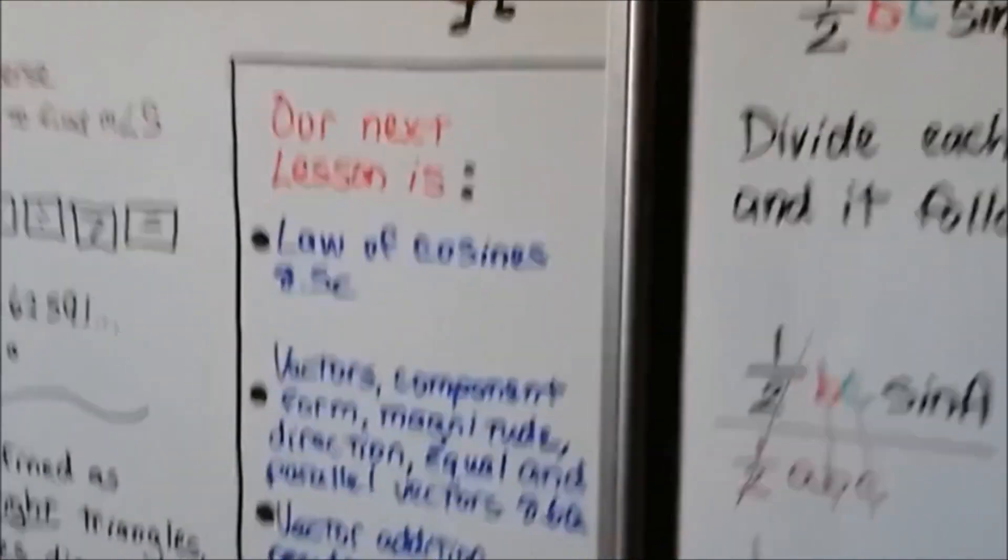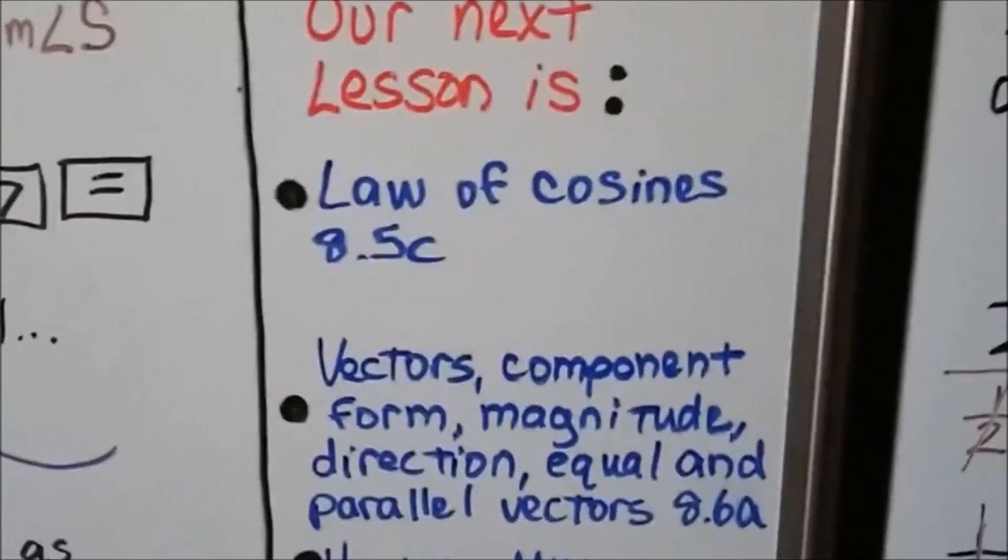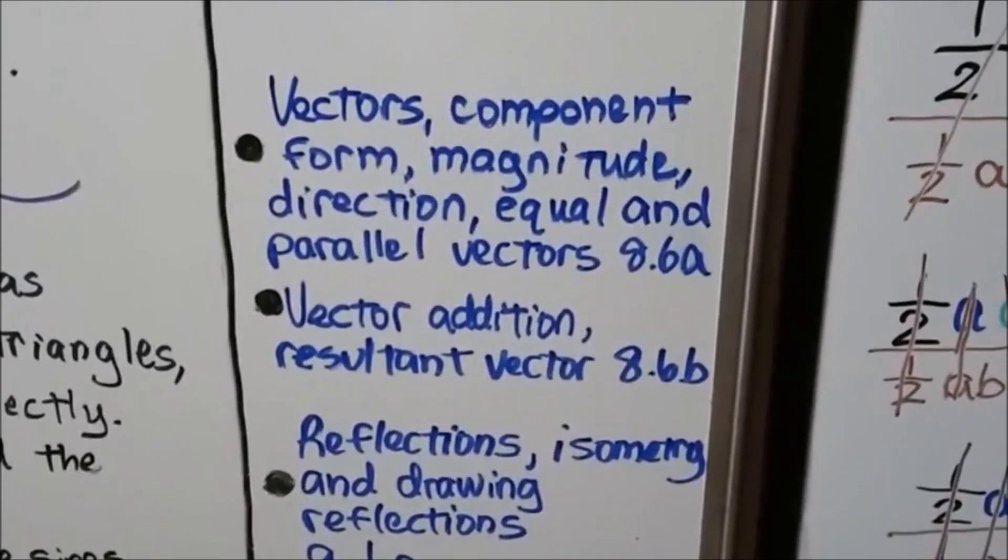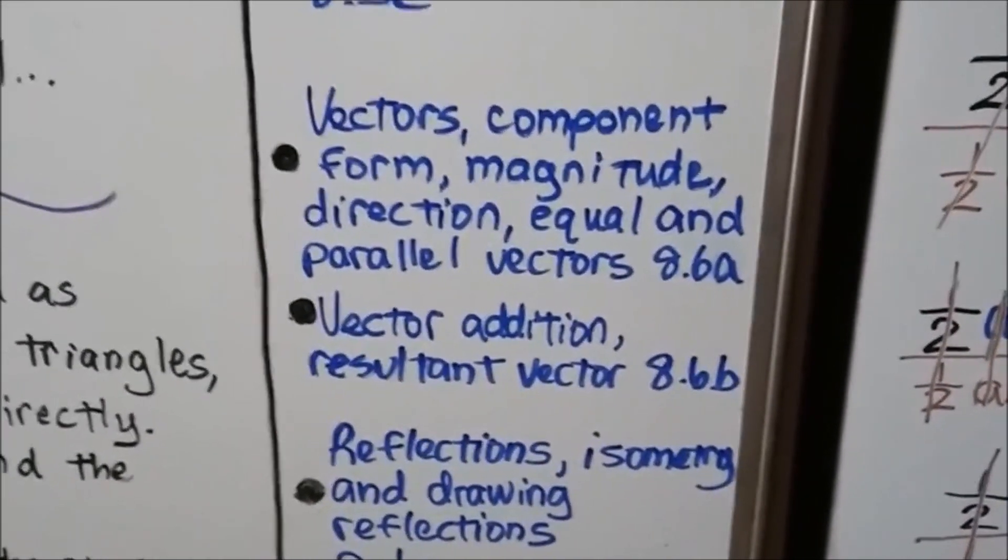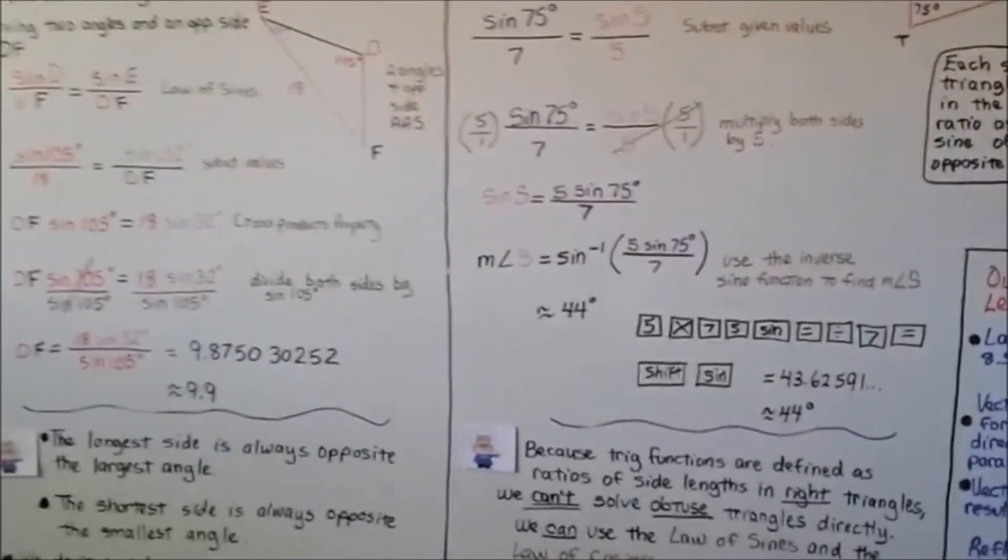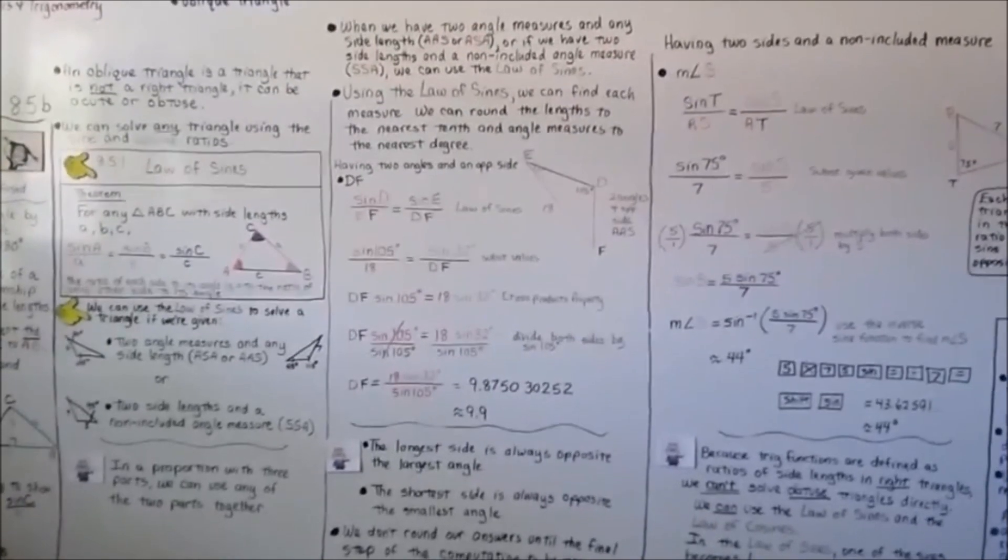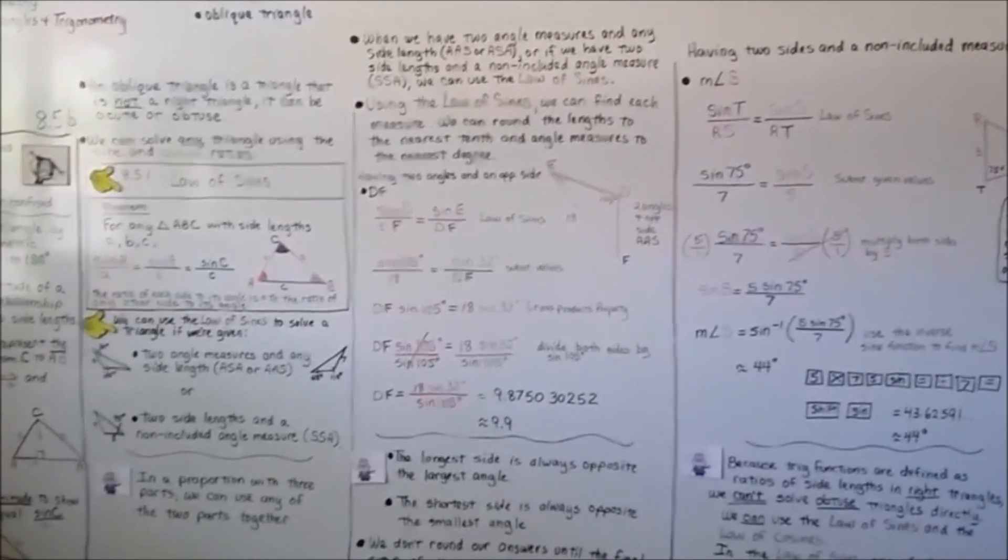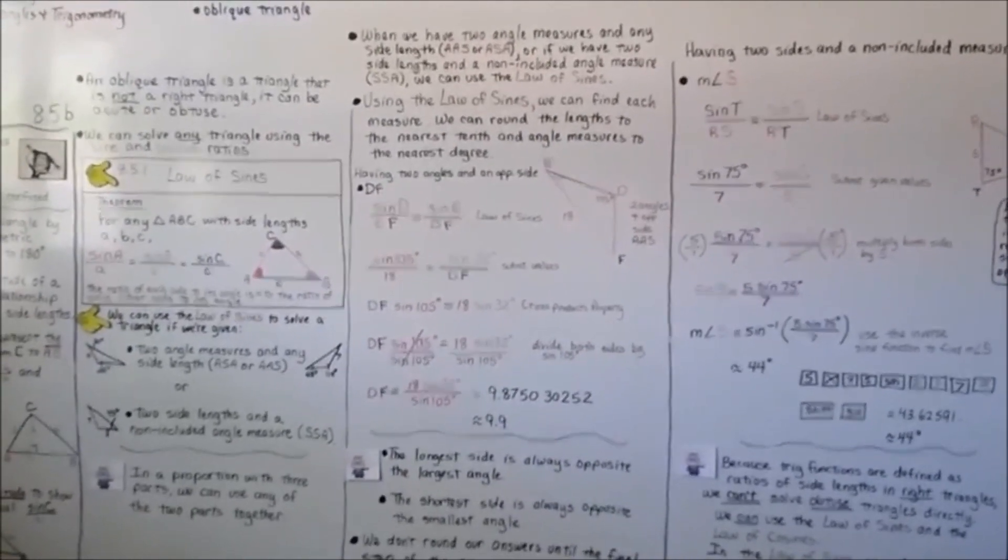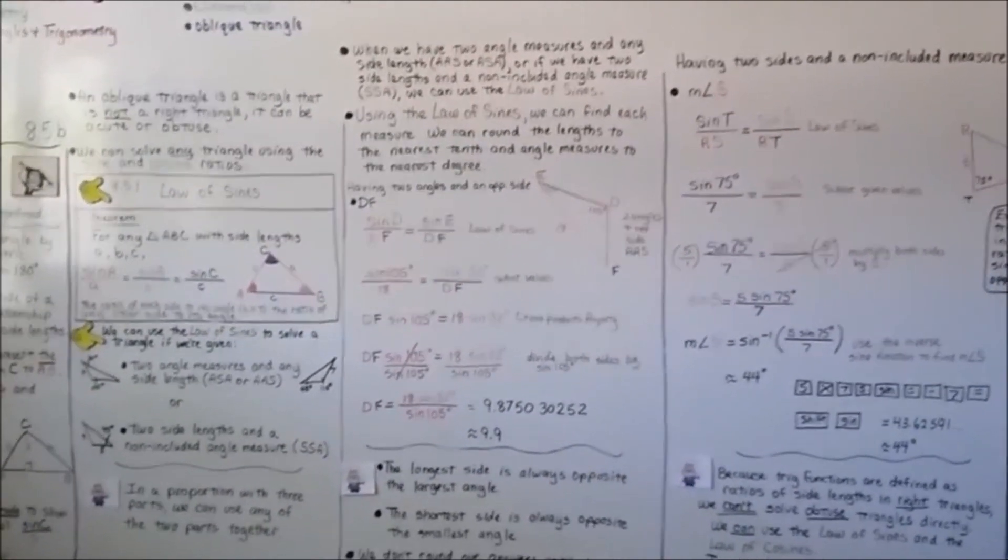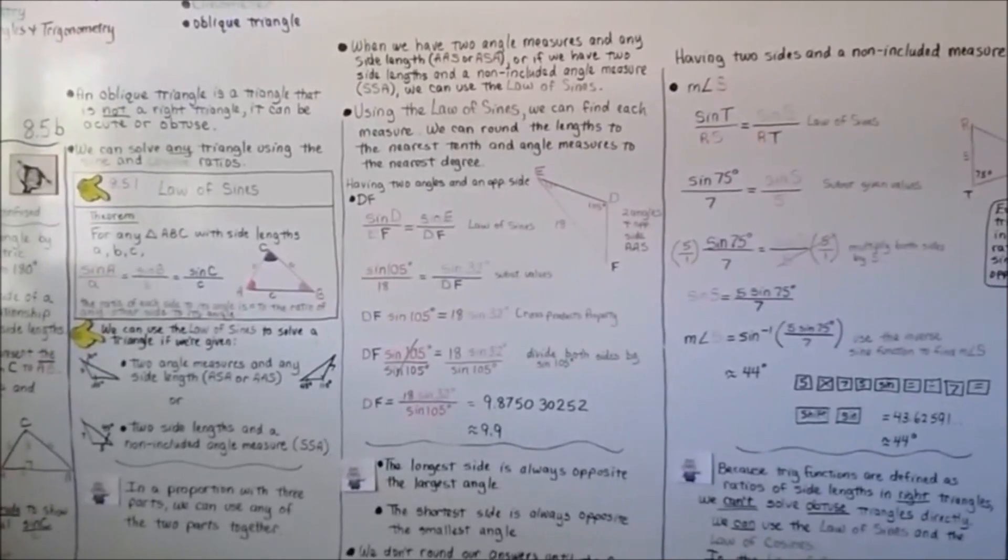Our next lesson is going to be the law of cosines, 8.5c. Then we're going to do a couple of videos about vectors, and then we'll get into chapter 9 with 9.1a, and we'll talk about reflections and transformations. I hope I explained this well enough. If you are confused, you could try watching the video again because sometimes you might catch something that you missed the first time. I hope you have a great day and you're doing well. I'm really proud of you for watching these videos. I'll see you next time.